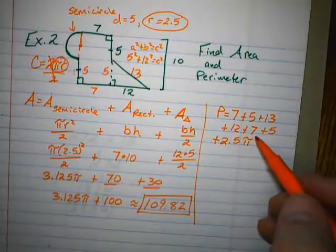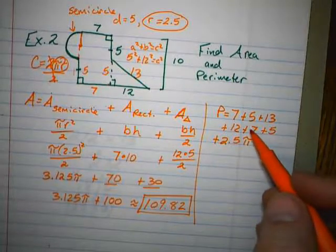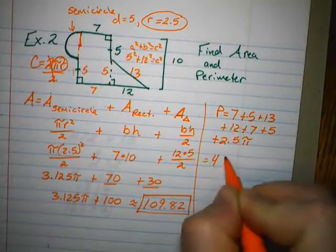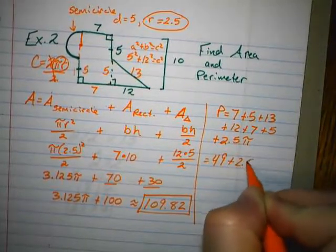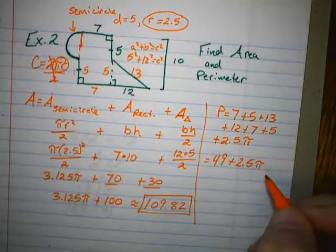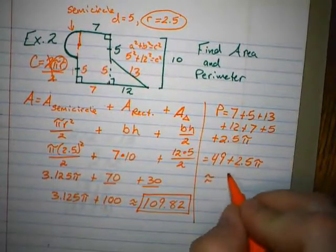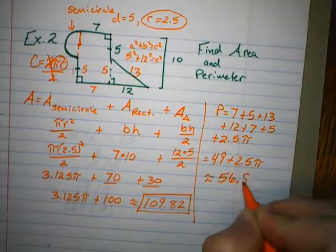And so if I add all those together, I think my calculator will do most of the work. All of these numbers without a pi combine to be 49, but then I have a plus 2 and a half pi. And when I plug all that in the calculator, I get a perimeter of approximately 56.85.